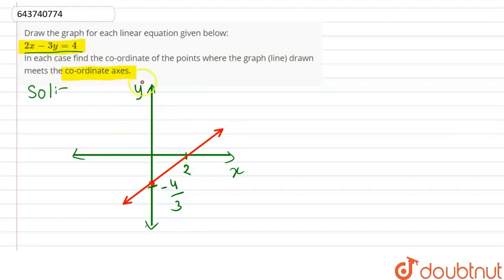We have to find the coordinate axes, so this is our 2 and 0, and this is our 0 and minus 4 by 3. Okay, so our coordinate axes are 2 and 0, and 0 and minus 4 divided by 3. So this is our final answer.